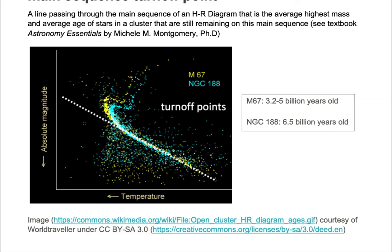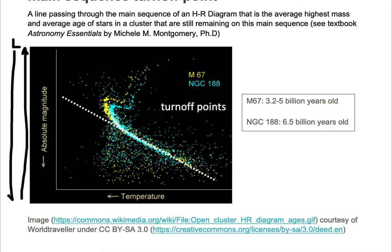Here we have an HR diagram. On the vertical axis, increasing upwards, is luminosity. In this particular example, they have absolute magnitude increasing in the negative vertical axis. Along the horizontal axis we have temperature increasing to the left. On this diagram we have two clusters of stars: M67 in yellow and NGC 188 in red.